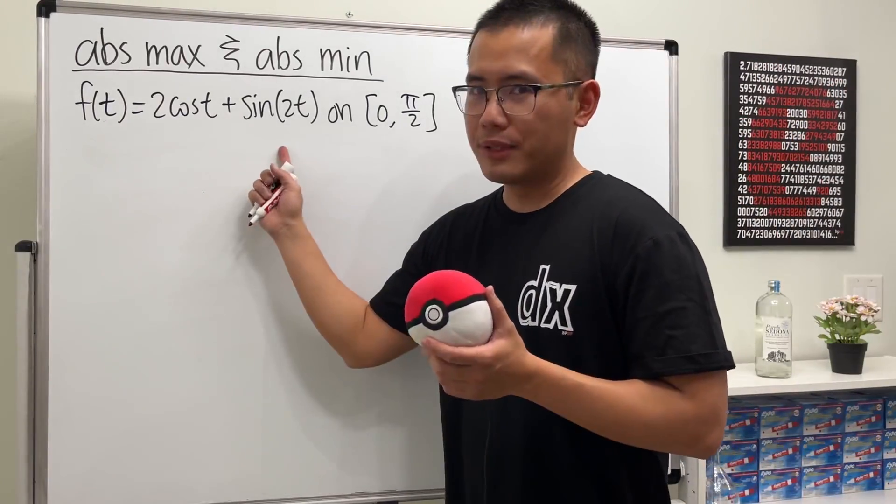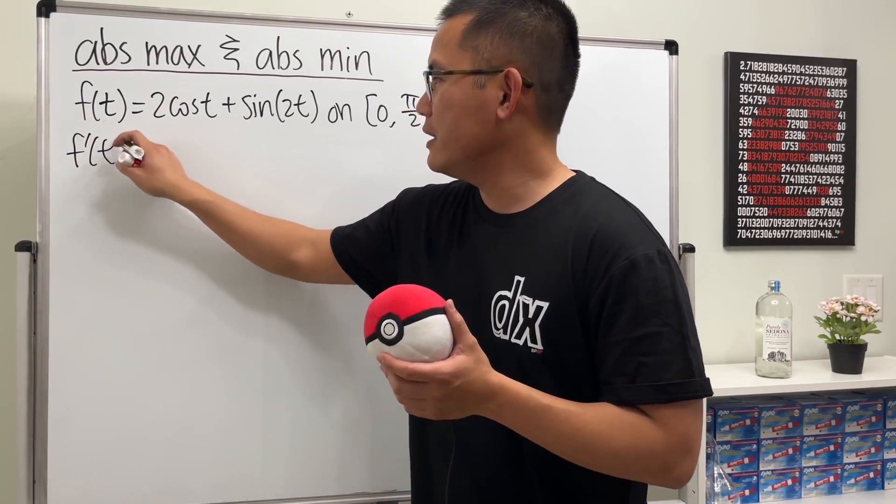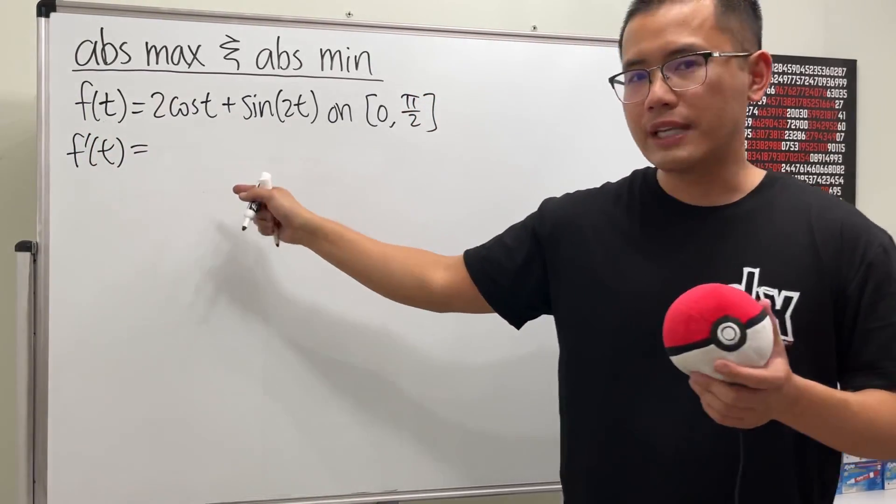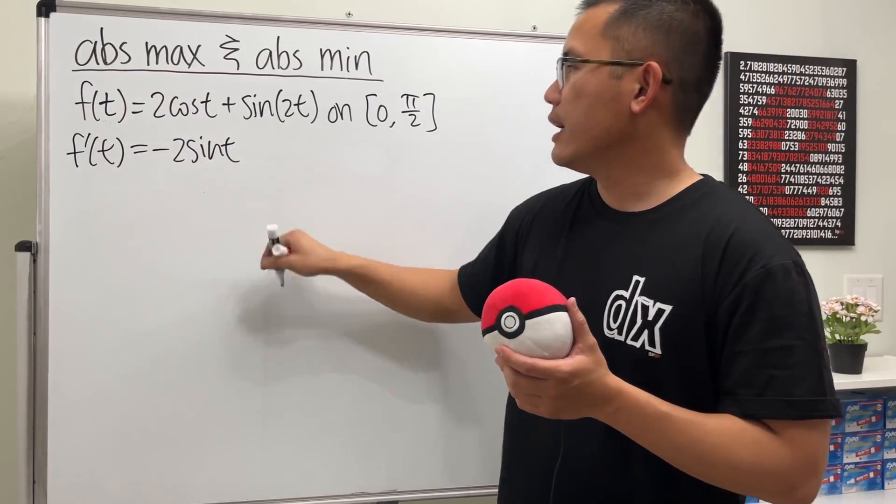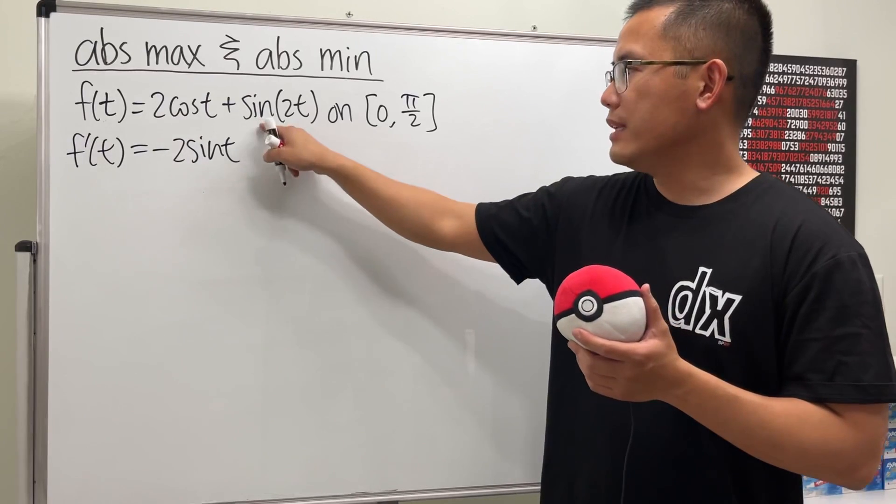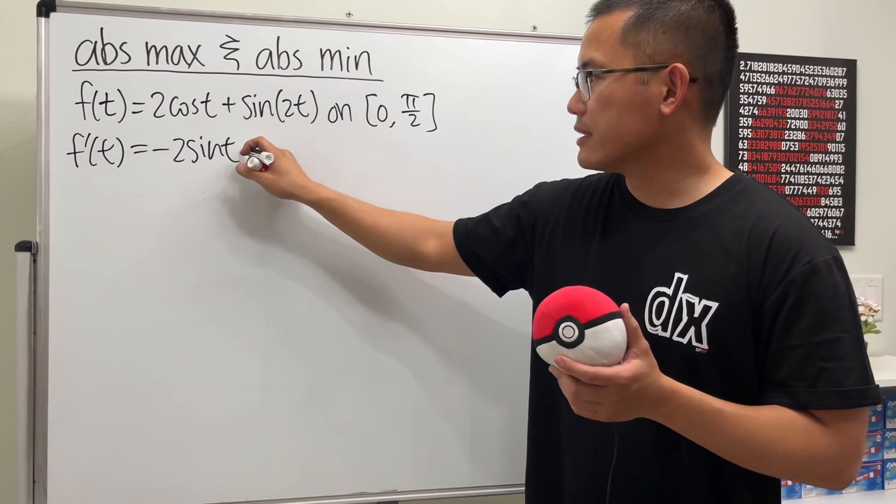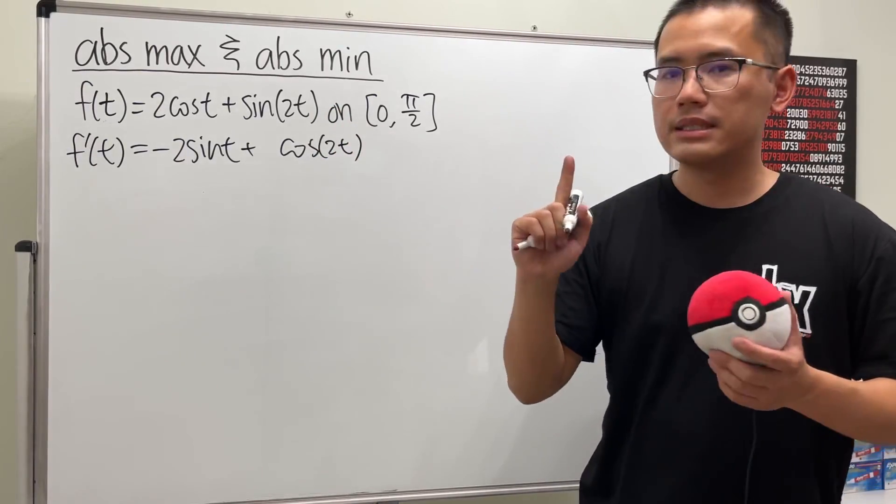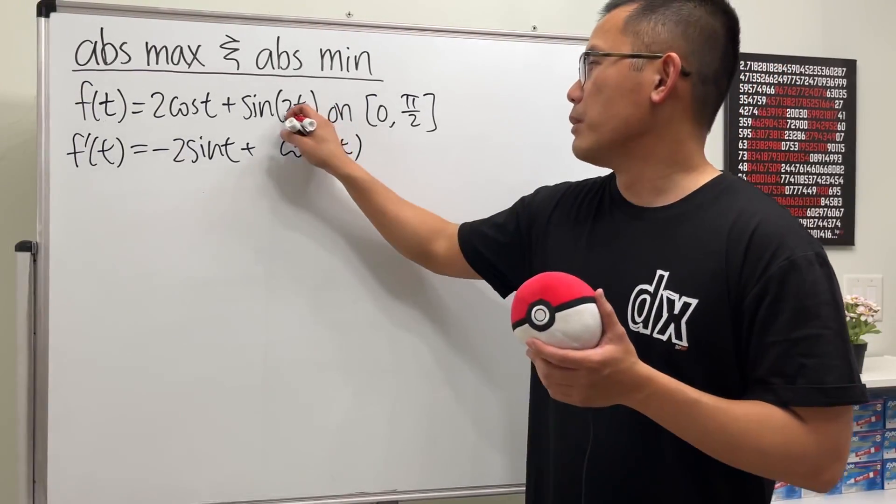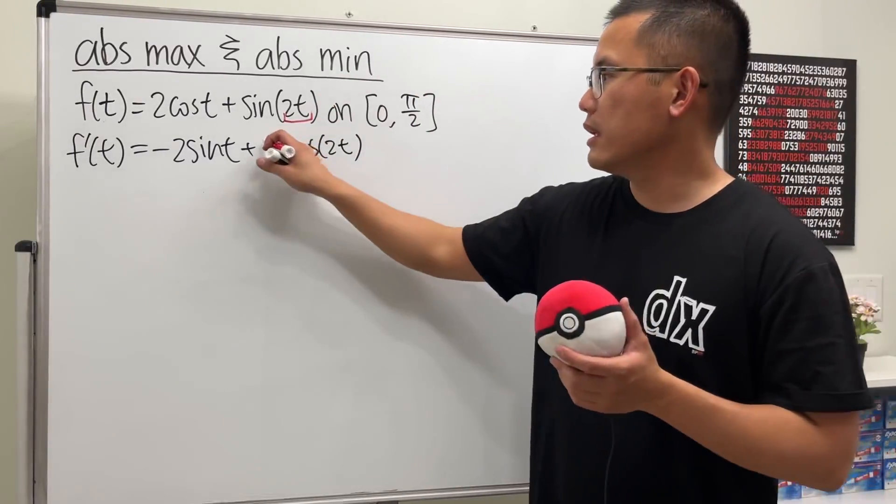First, we have to get the derivative. So let's go ahead and do it. f'(t), the derivative of 2cos(t) is -2sin(t). And then for this right here, the derivative of sine is cosine. So let's put that down. And the input right here stays the same, but we have to use the chain rule. Multiply by the derivative of the inside, which is another 2.